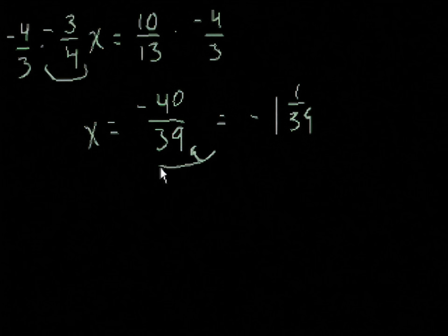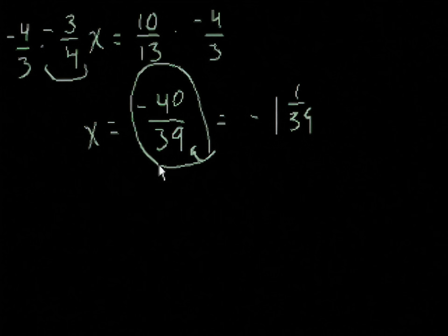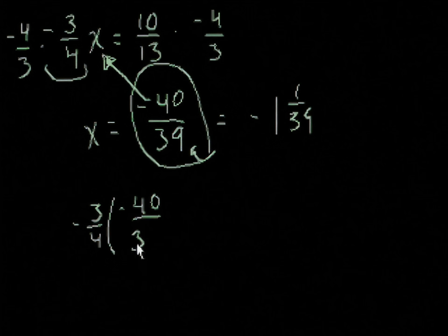Let's check to make sure that's right. The cool thing about algebra is you can always get your answer and put it back into the original equation and make sure you were right. So the original equation was minus 3 fourths times x. And here we'll substitute the x back into the equation. Wherever we saw x, we'll now put our answer. So it's minus 40 over 39.